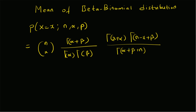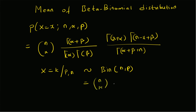Basically it is a compound distribution consisting of both beta and binomial. The conditional variable x equal to k, given the value p and n — where p is the probability parameter of the binomial distribution — follows a binomial distribution with parameters n and p. It is defined as n choose k multiplied by p^k times (1 minus p)^(n minus k).